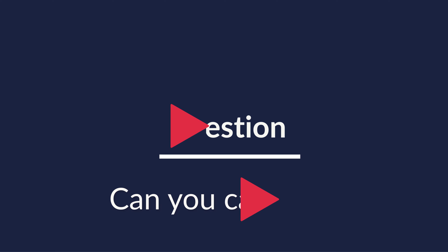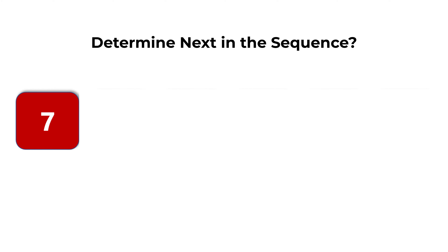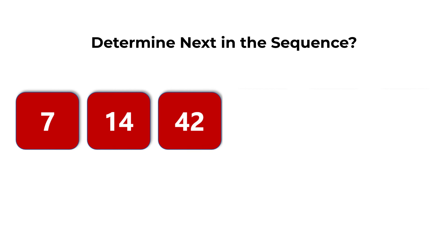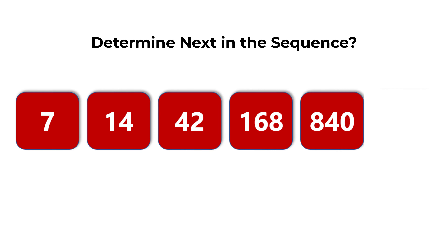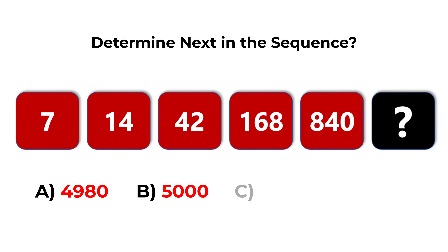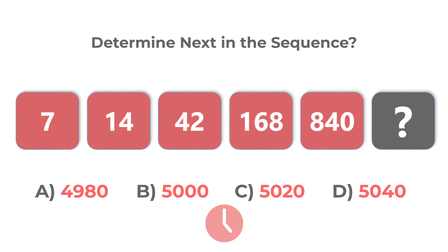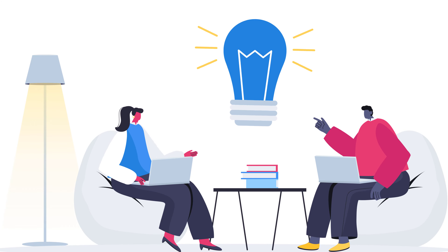Here is a sequence question. You need to determine what comes next. The numbers are 7, 14, 42, 168, 840, and then the missing number. Choose from: A) 4,980, B) 5,000, C) 5,020, D) 5,040. Give yourself a little bit of time because coming up with the answer might require some calculations.